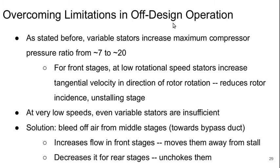To overcome these limits in off-design operation, there are a few things we can do. We can use variable stators, which can increase the maximum practical compressor pressure ratio from about 7 to about 20. For the front stages at low rotational speed, the stators increase the tangential velocity in the direction of rotor rotation, which reduces rotor incidence and unstalls those front stages. At very low speeds, even variable stators are insufficient, and the solution is to bleed off air from the middle stages towards the bypass duct. This allows increased flow in the front stages, moving them away from stall, while decreasing flow in the rear stages to avoid choking. This is terrible for cycle efficiency and not suitable for long-term operation, but it's critical for transients such as engine start-up and near-idle conditions during descent.